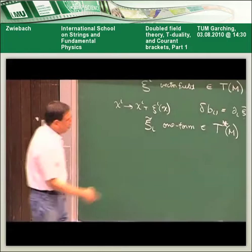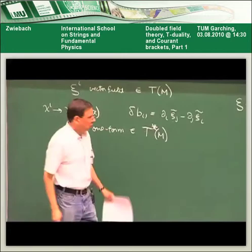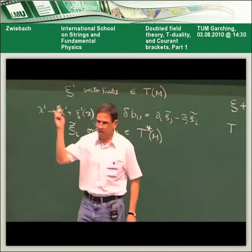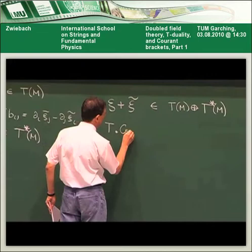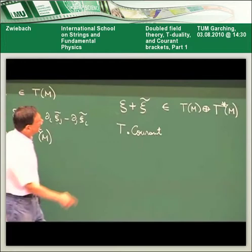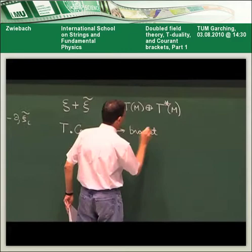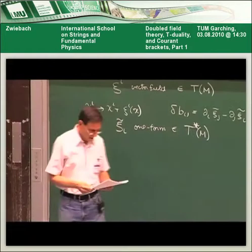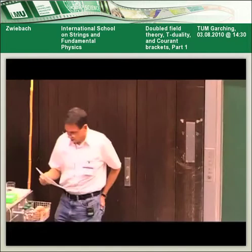In working with such gauge parameters, T. Courant — who was a student in Berkeley in the early 90s and a mathematician, not the Courant of Courant and Hilbert — invented a bracket that we will discuss in detail, which generalizes the Lie bracket and applies to these generalized parameters. This bracket was very influential and we'll see how it shows up. It's a very strange construction in a sense.